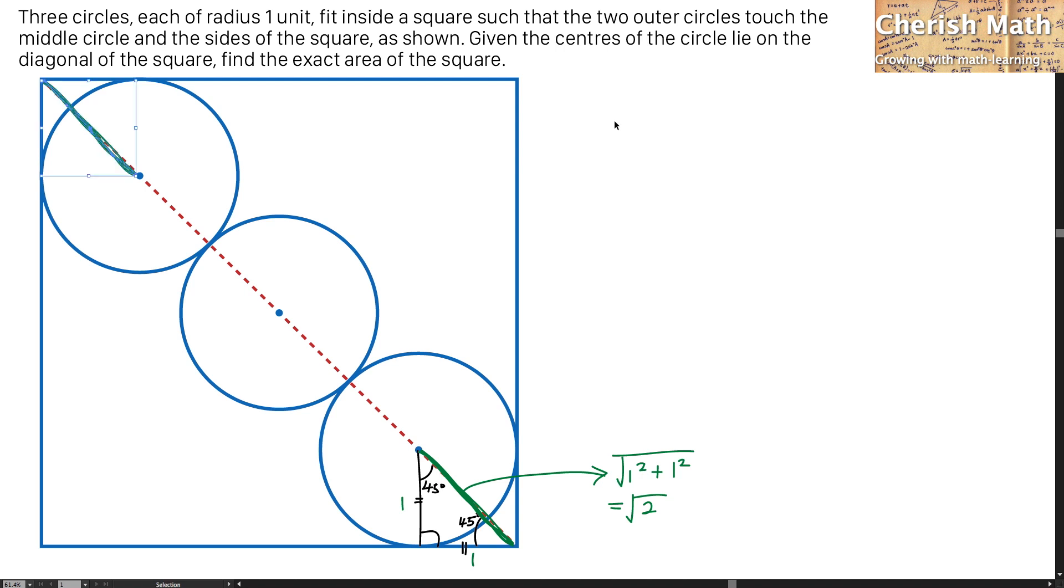And the same length applies over here as well, where the length here is square root of 2. I know that the radius of the circle is actually 1 unit. So I label here a straight line connecting the radius of the circle, each with a radius of 1 unit.